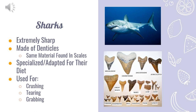Shark teeth are razor sharp, and are even composed of the same material used for their scales, called denticles. Because of this, they can constantly replace their many rows of teeth throughout their lives. When one falls out, the one behind it simply takes its place, while a new one is made in the back of the mouth. The shape of a shark's tooth is suited towards its diet, and can be used for crushing, tearing, or simply grabbing, depending on the type of shark.